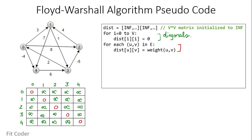We pick each edge from the graph and enter it into the 2D matrix. There is an edge from 0 to 1 with weight 3, from 0 to 4 with weight -4, from 1 to 4 with weight 7, from 1 to 3 with weight 1, from 2 to 1 with weight 4, from 3 to 2 with weight -5, from 3 to 0 with weight 2, from 4 to 3 with weight 6, and from 0 to 2 with weight 8. In this manner, all edges are entered into the 2D matrix.